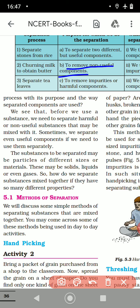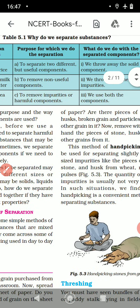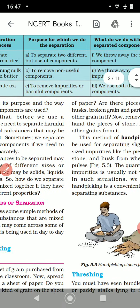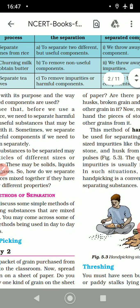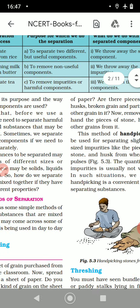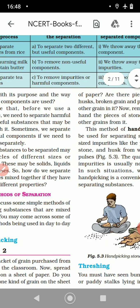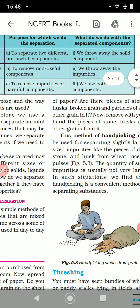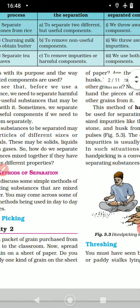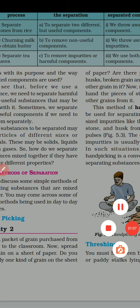The second is churning of meat to obtain butter, so both components are useful — it will be to separate useful components. Now for separating leaves, we ask: what do we do with the separated components? We throw away the stones, we throw away the impurities of tea, and for butter we use both of them.